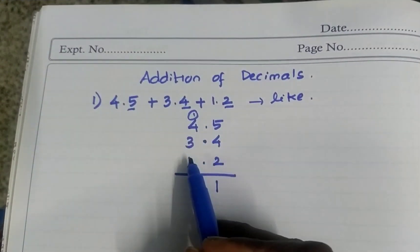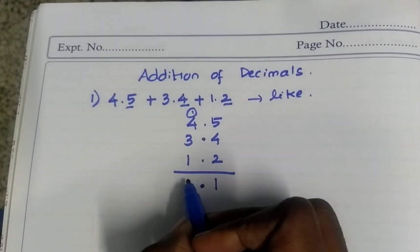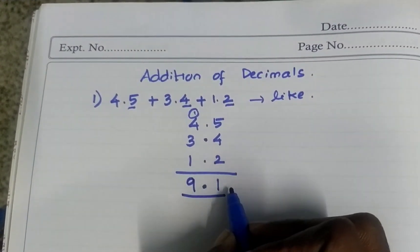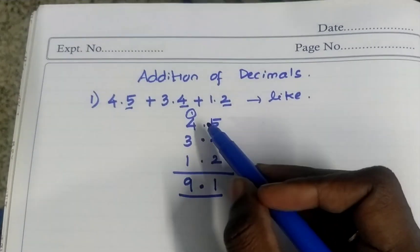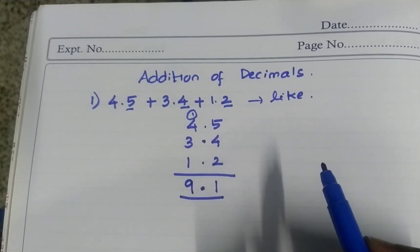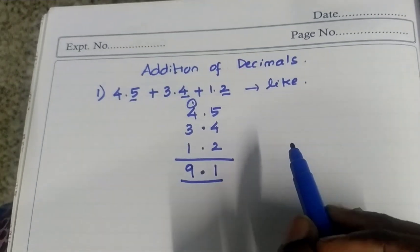Now add this. 4 plus 1, 5. 5 plus 3, 8. 8 plus 1, 9. 9.1. So same like addition only, but the point, wherever it is, you have to keep straight. This is called like decimals addition.